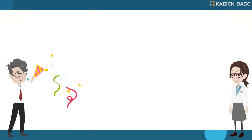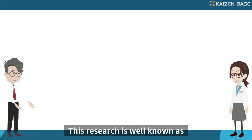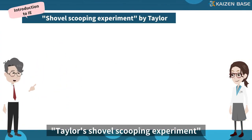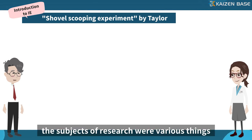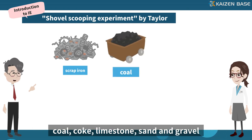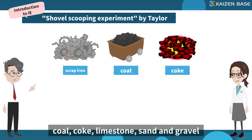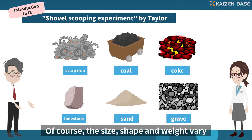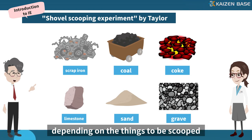This research is well known as Taylor's Shovel Scooping Experiment. At that time, the subjects of research were various things to be scooped by shovels, such as scrap iron, coal, coke, limestone, sand, and gravel. Of course, the size, shape, and weight vary depending on the things to be scooped.